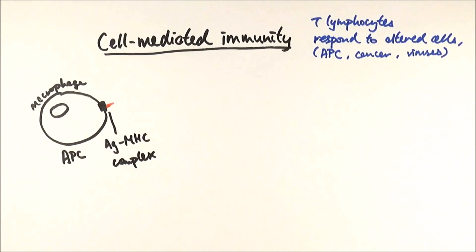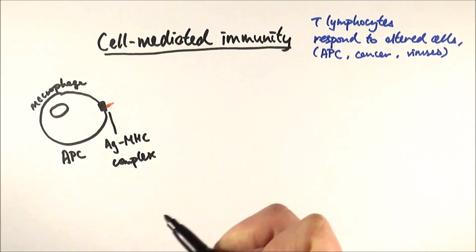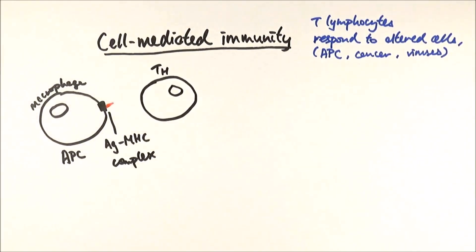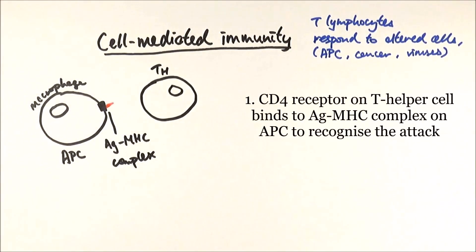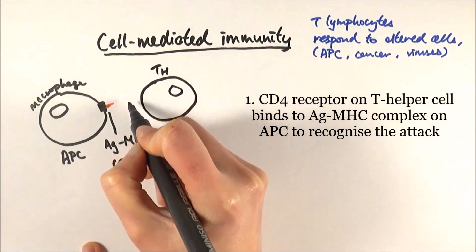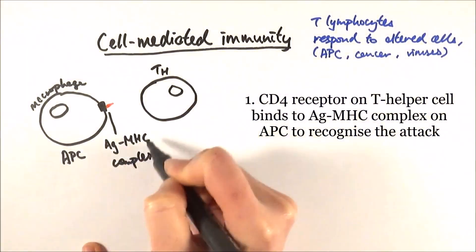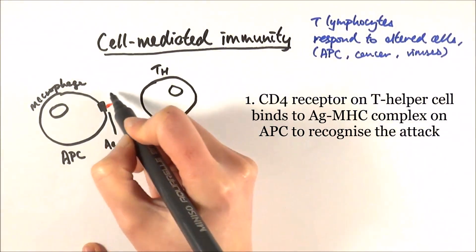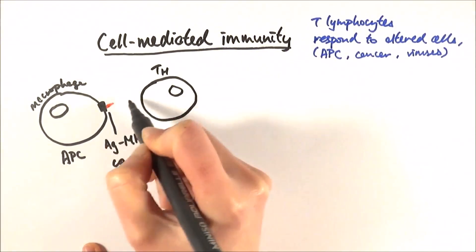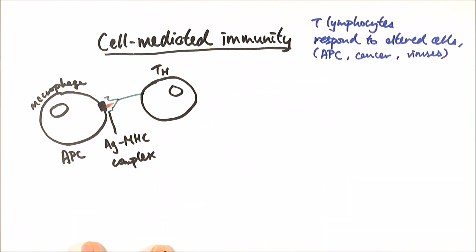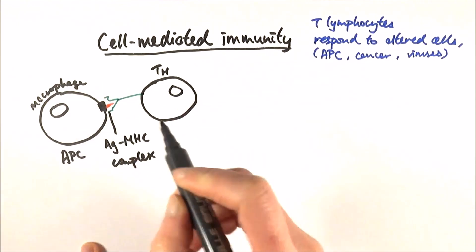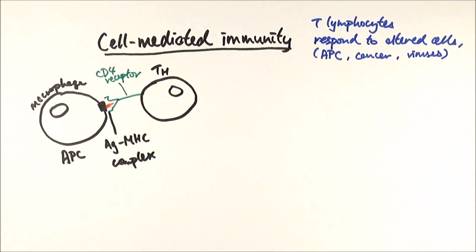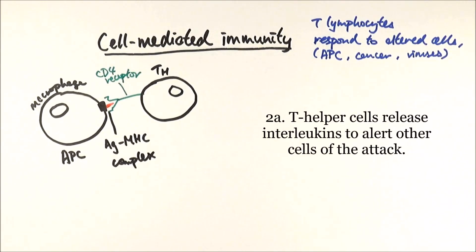The first official step of cell-mediated immunity is that a T helper cell comes along. On its cell surface it has a CD4 receptor, which recognizes the antigen-MHC complex on the antigen-presenting cell. After binding, the T helper cell releases interleukins to alert other cells of the attack.